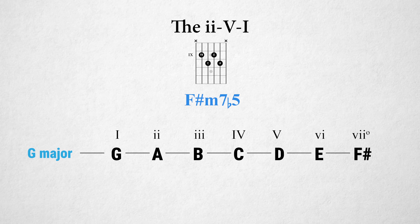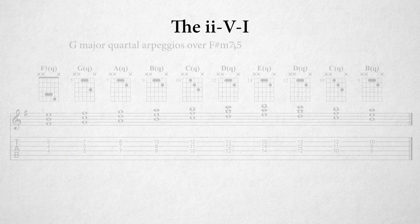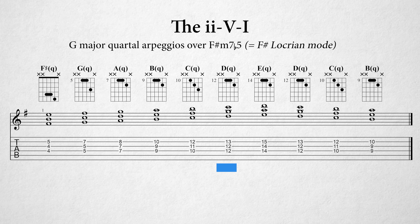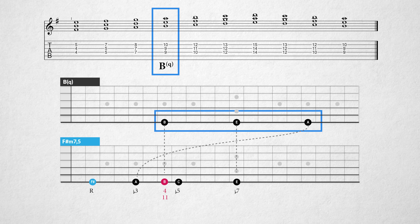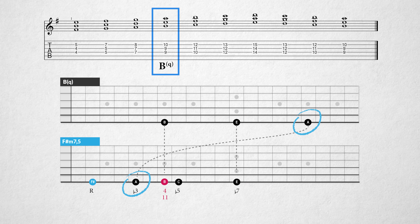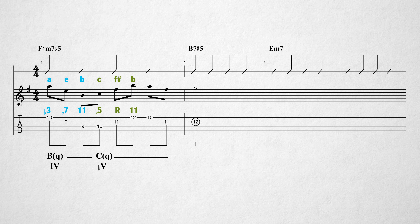Over the F sharp minor 7 flat 5 chord, we can play the quartal arpeggios of the G major scale, because F sharp minor 7 flat 5 is the 7th degree in the G major scale. The quartal arpeggio of the fourth degree contains the notes B, E, and A. The note B is the 4th or 11th degree in the F sharp minor 7 flat 5 chord, the note E is the minor 7th, and the note A is the minor 3rd. The quartal arpeggio on the flat 5th degree C contains the notes C, F sharp, and B. The note C is the diminished 5th, F sharp is the root, and B is the 11th. Both arpeggios over the F sharp minor 7 flat 5 chord sound like this.